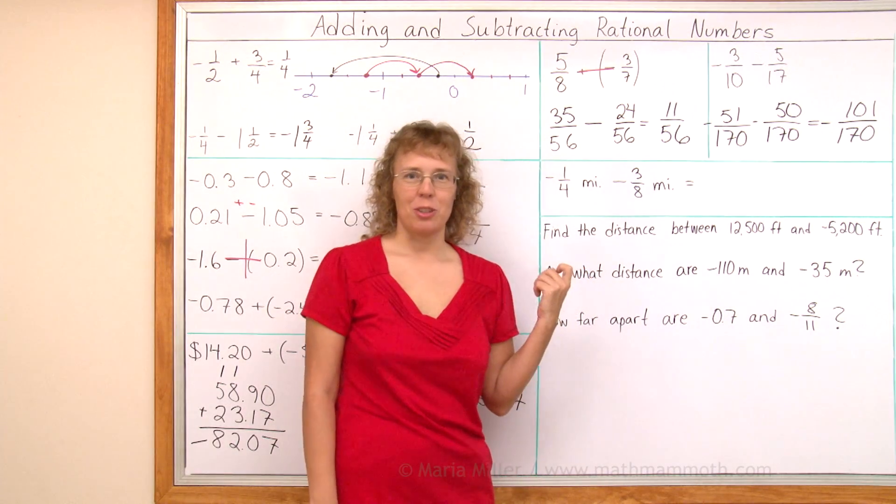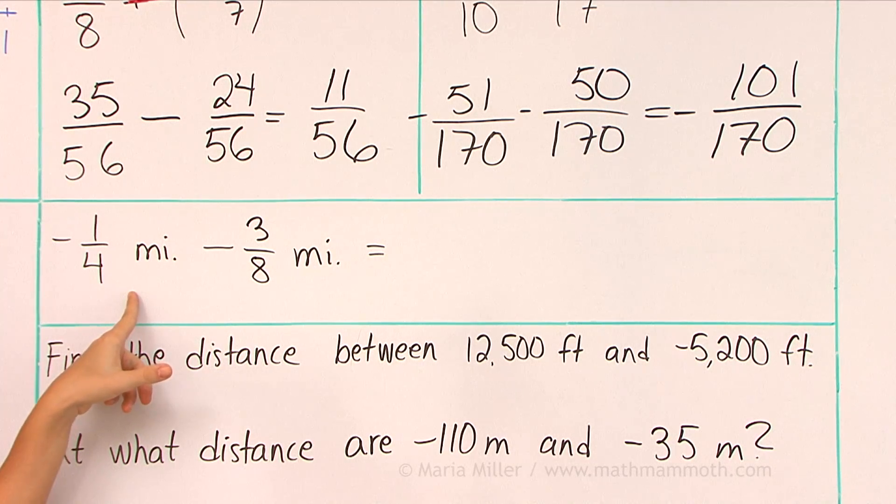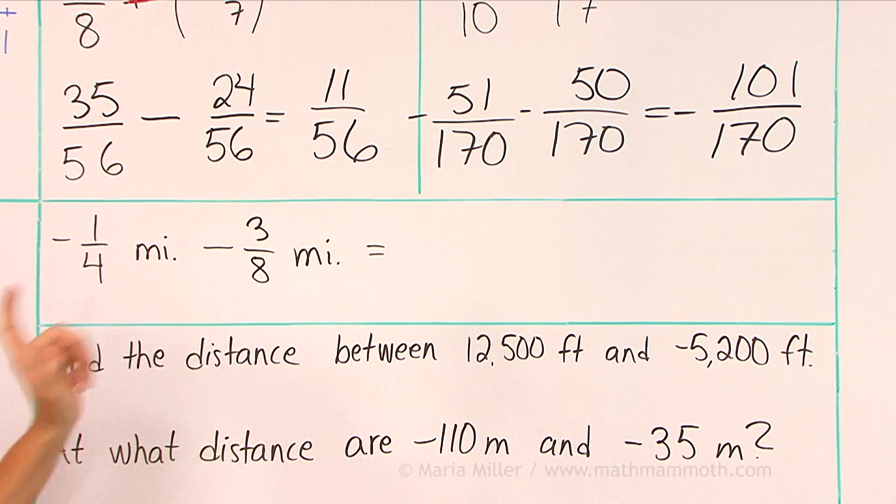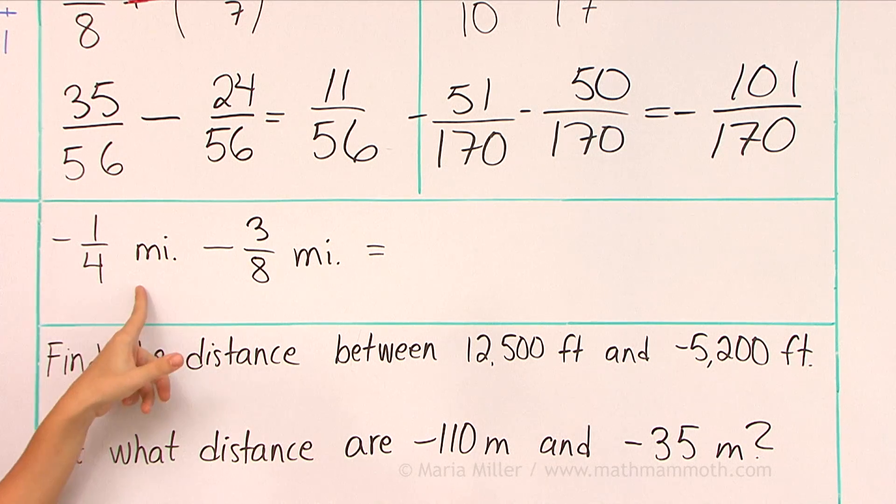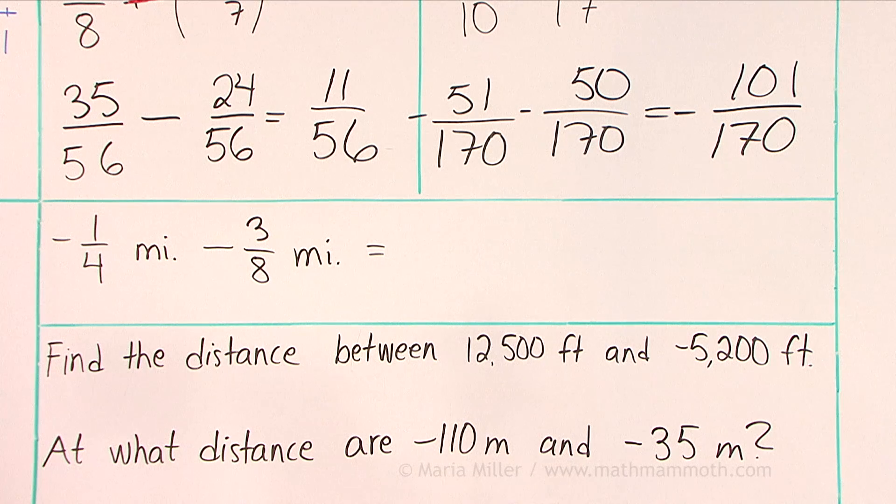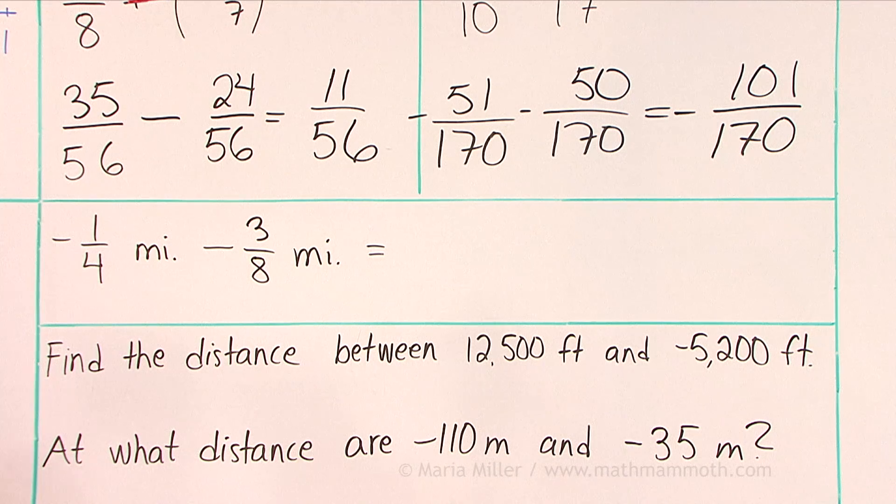Now I have a different question for you. In what kind of a real-life situation might you need to calculate this kind of a calculation? Negative one-fourth of a mile minus three-eighths of a mile. Think about it.